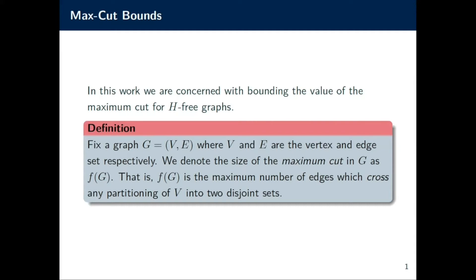The maximum cut value of a graph is the maximum number of edges that cross over all such bipartitions. You can also think of this as the size of the largest bipartite subgraph in G in terms of the number of edges.